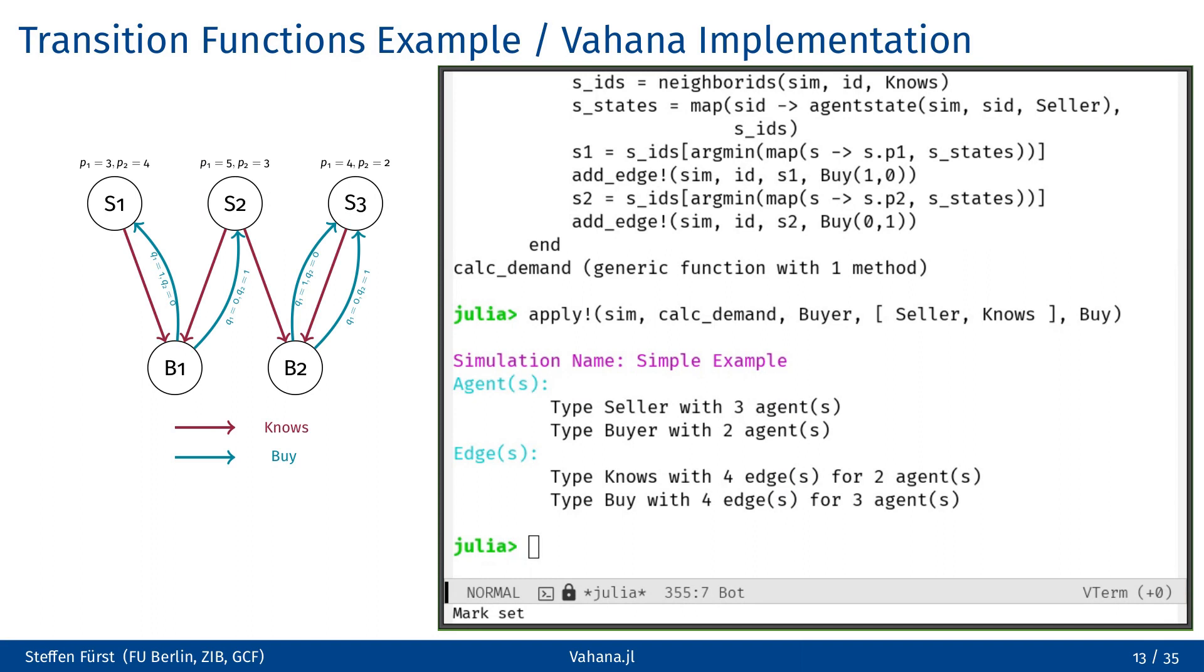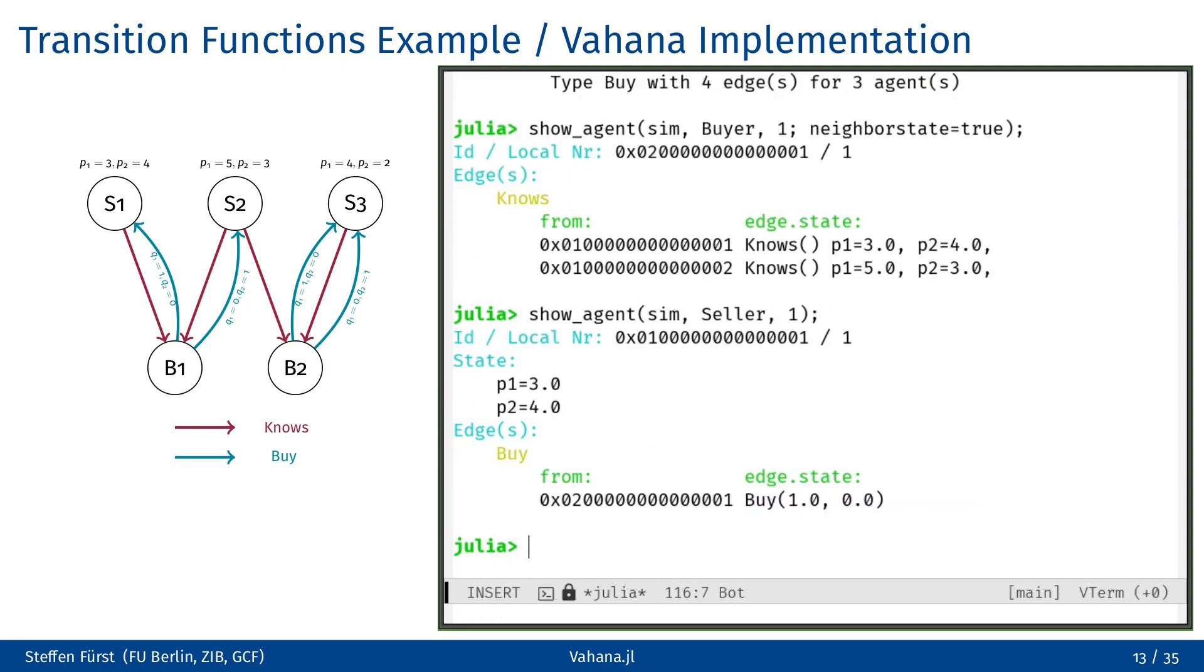We can utilize the REPL to examine the state of the simulation. As already seen, the show function of the simulation provides an overview of the current state, including the numbers of agents and edges per type. Given the extensive use of edges in a Vahana model, a simple check of the number of these edges can quickly reveal if something is not working as expected. It's also possible to inspect the simulation from the perspective of an individual agent. In this case, the specific part of a graph that the agent can access within a transition function is displayed.